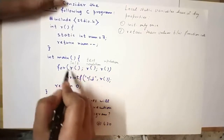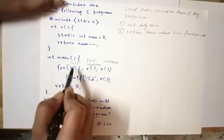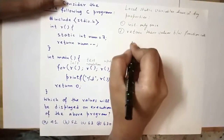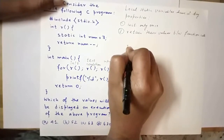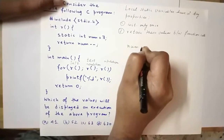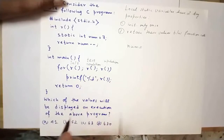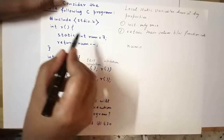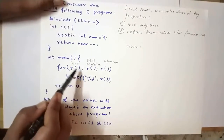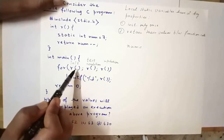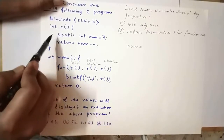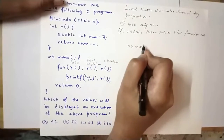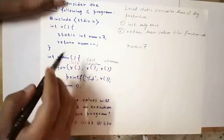The initialization part in a for loop is carried out exactly once. When the initialization part runs, the function r is invoked and control transfers to its first line: static int num equal to 7. This is the first time our variable num comes into existence and it is given a value of 7.